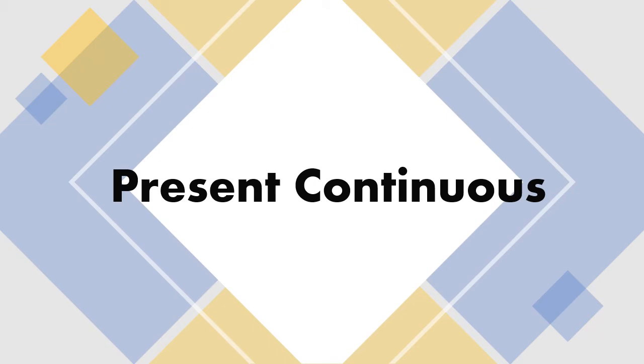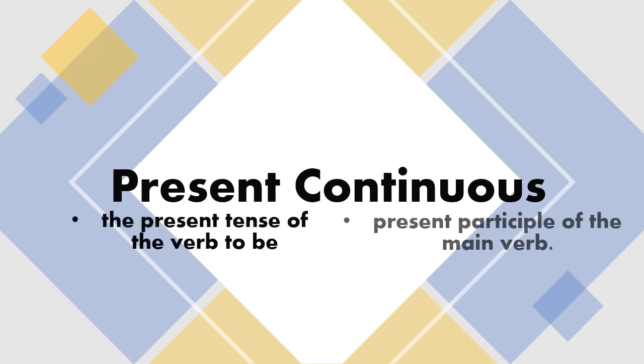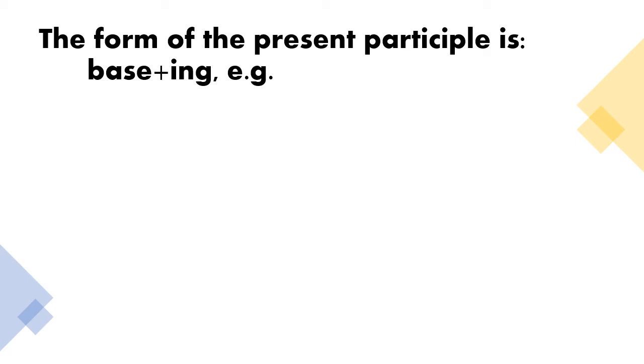Present continuous of any verb is composed of two parts. The present tense of the verb to be and present participle of the main verb. The form of present participle is base plus ing. For example, talking, playing, moving, smiling.